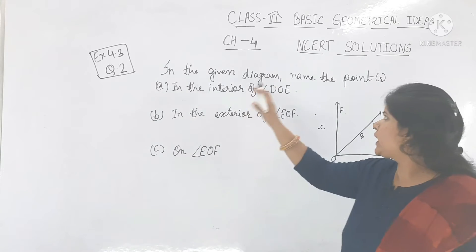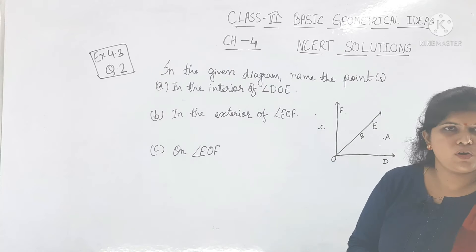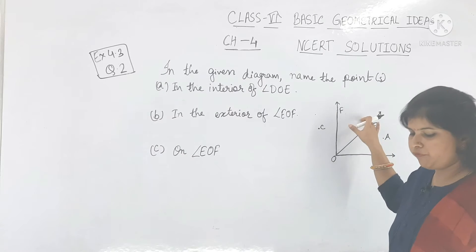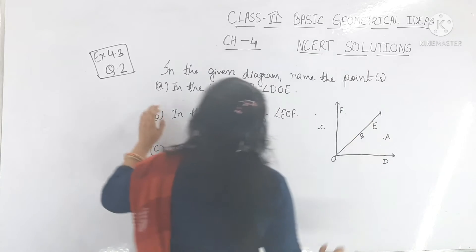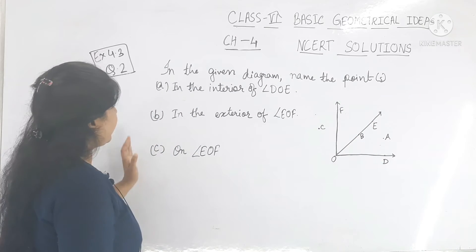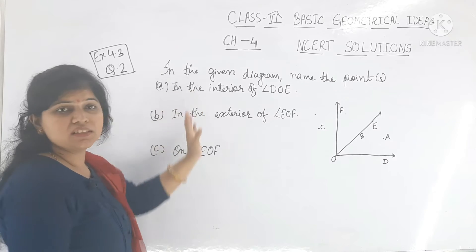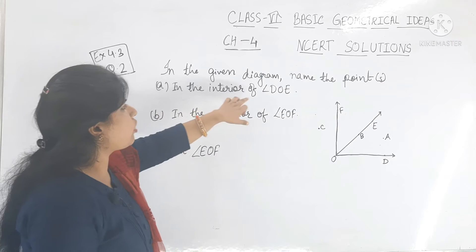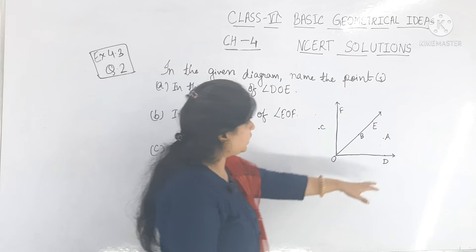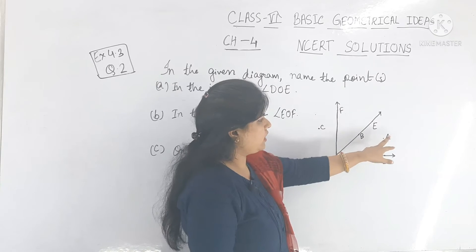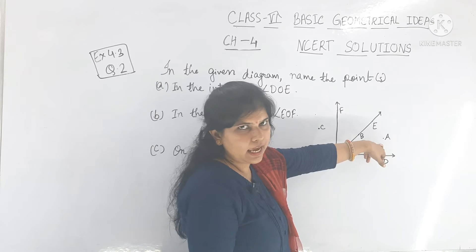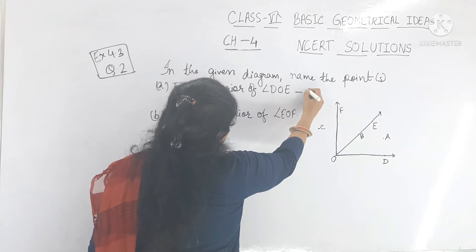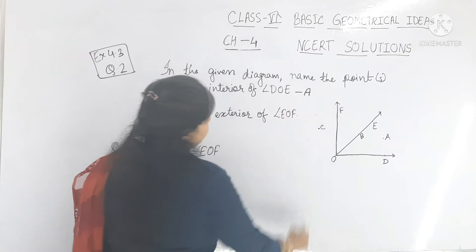Next is question number 2. In the given diagram, name the point or points. You have to see the figure and answer the given statements. Number 1: in the interior of angle DOE — the interior point is A. The answer should be A.